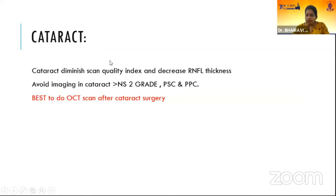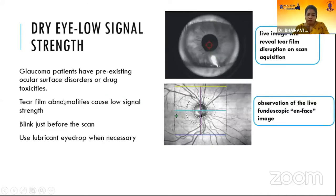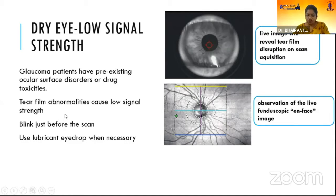Cataract diminishes scan quality index and decreases RNFL thickness, so it is best to perform the OCT scan after cataract surgery. Tear film abnormalities also cause low signal strength. Since glaucoma patients already have pre-existing ocular surface disorders due to drug toxicities, we should ask the patient to blink normally, blink just before the scan, and use lubricant eye drops whenever necessary.